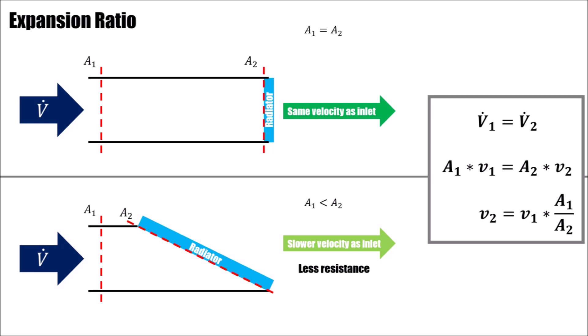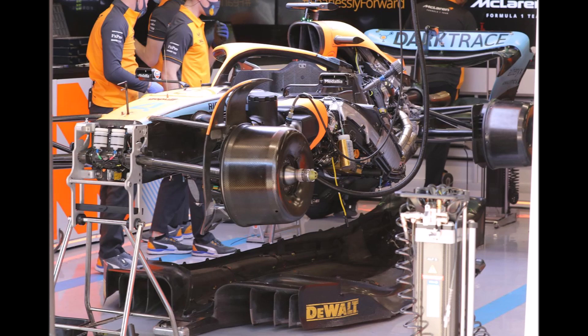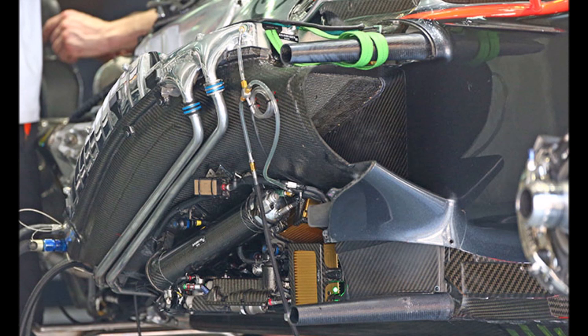That way, the expansion between inlet and radiator is relatively high and the flow slows down a lot, which reduces the losses of the internal flow. But the problem that the side radiators are making the cars wider still remained.